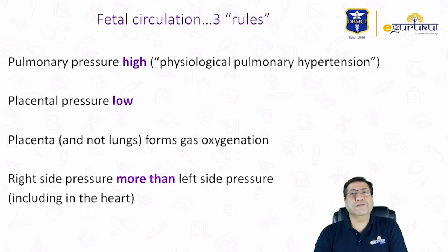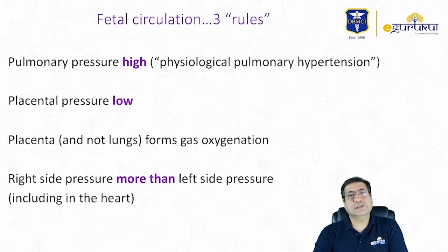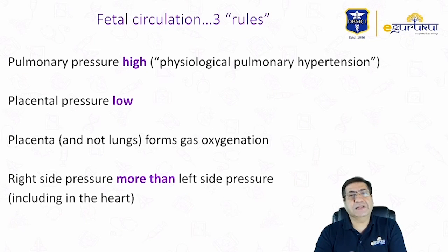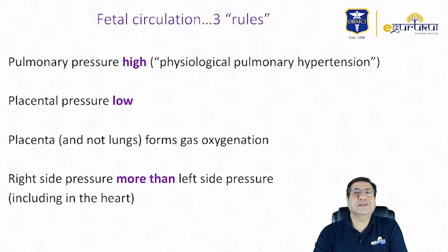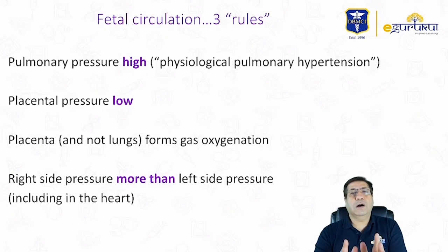The first most important difference is that the pulmonary pressures in the fetal circulation are usually very high. This is contributed mainly by the presence of fluid in the alveoli which compresses the pulmonary vessels. In addition, intrauterine low oxygen saturation results in pulmonary vasoconstriction, and there are also potent pulmonary vasoconstrictors which contribute to this pulmonary hypertension.